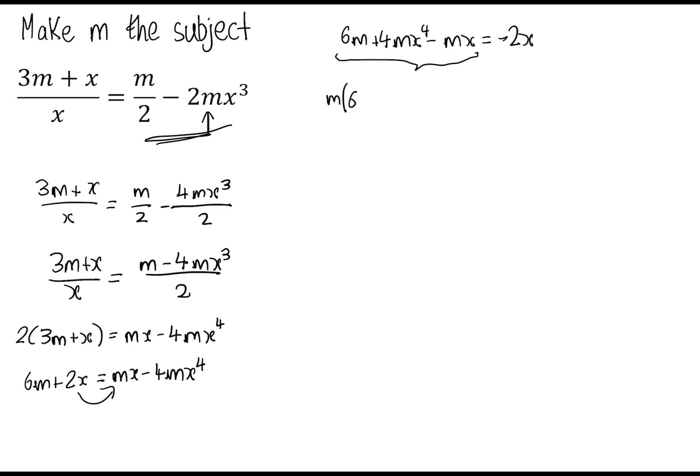So we have m lots of 6 plus 4 lots of x to the 4 minus x. And this is equal to minus 2x. So finally, all we need to do is divide both sides of the equation by this. So we're left with m is equal to minus 2x over 6 plus 4x to the 4 minus x. And that's our final answer.